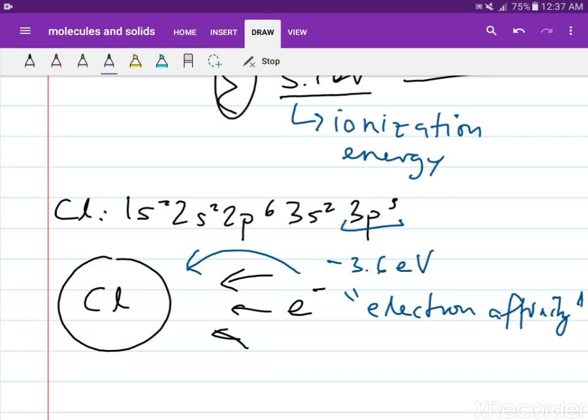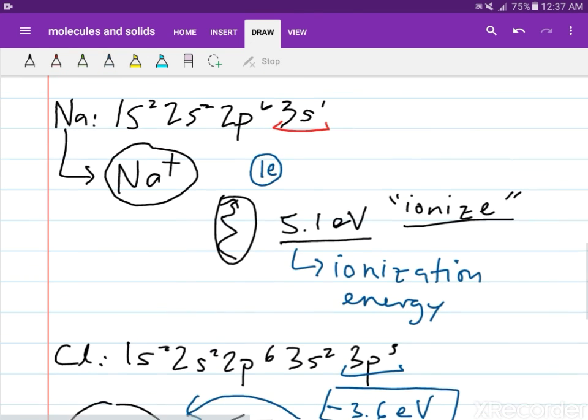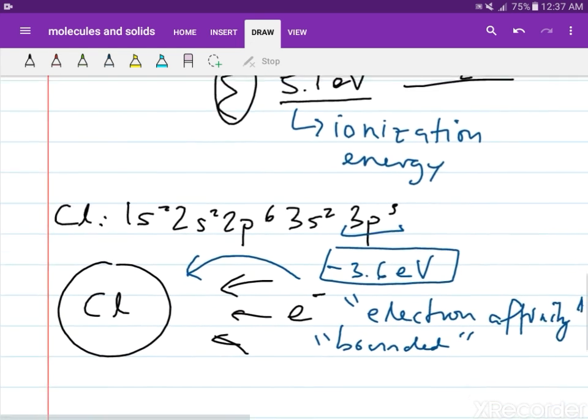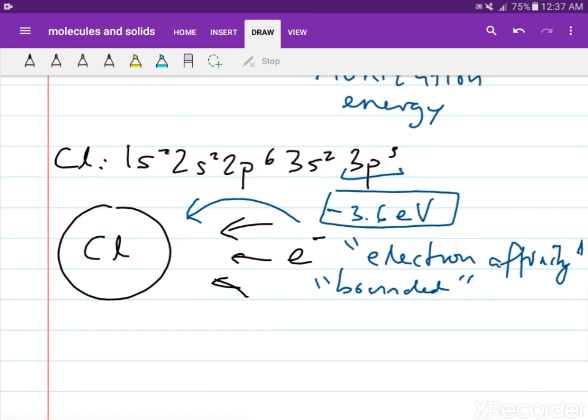It is negative because the electron wants to be bounded inside the atom. Contrary to what we observed in sodium atoms, where the electron wants to escape or be ionized, for the chlorine atom it wants to be bounded. That's why we need negative 3.6 electron volts.